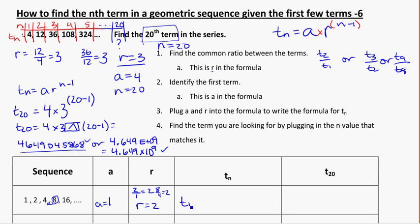My formula then, for t sub n, my general formula here, is going to be 1 times 2 to the power of n minus 1. You could write that probably as just 2 times 2 to the power of n minus 1. Now if I want to find the 20th term, I'm going to plug in n equals 20 in this case. So 1 times 2 to the power of 20 minus 1.